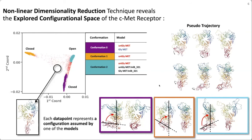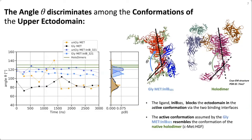The second consideration concerns the representative conformations. The conformation assumed by the complexes is the only open one — open based on the angle spanned by the axis passing through the Sema domain from top to bottom and the immunoglobulin-like domain from side to side, as if it were a cylinder. Looking at this theta angle, we are able to discriminate between active and inactive conformations.